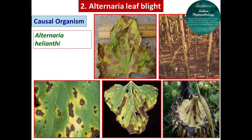The fungus produces cylindrical conidiophores which are pale gray to yellow colored, straight or curved, simple or branched, and may be septate bearing single conidia. The conidia of Alternaria are cylindrical to long ellipsoid. The most important character of the conidia is that they are two to five septate with transverse and longitudinal septa. These are the microscopic identification marks for Alternaria spores.